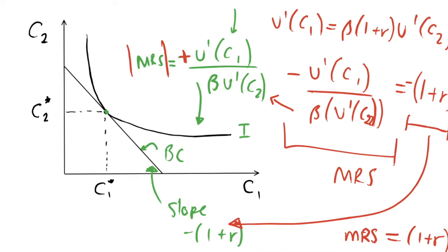The Euler equation is our optimality condition. We want to exhaust our budget constraint, so we keep pushing our indifference curves up and to the right until they are just tangent to the budget constraint boundary and can't be pushed further. The Euler equation is simply a time preference relation stating that this tangency condition must hold for us to be at the optimum.